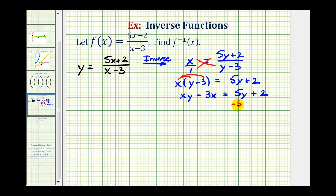Let's start by subtracting five y on both sides. So this would give us xy minus five y minus three x equals two. Now we'll add three x to both sides. So now we have xy minus five y. It's going to be equal to three x plus two.